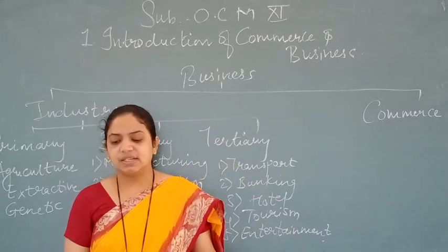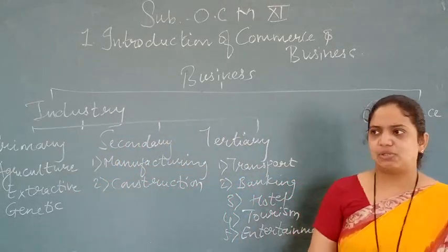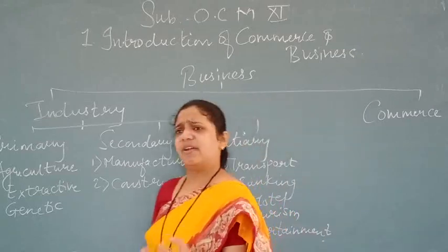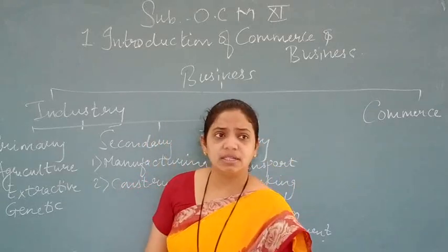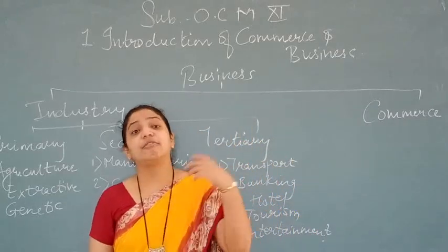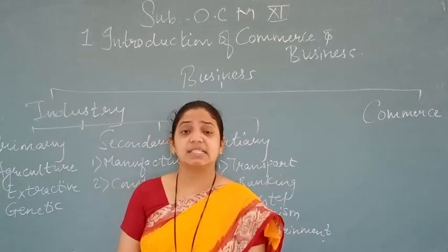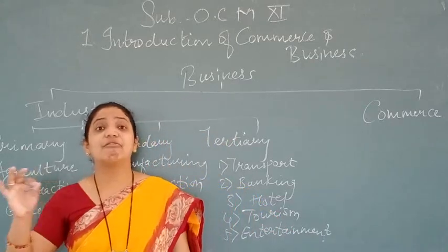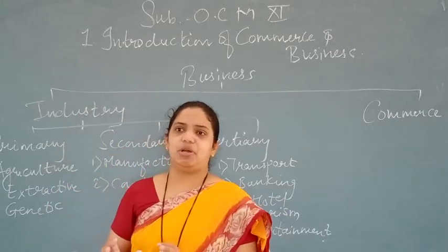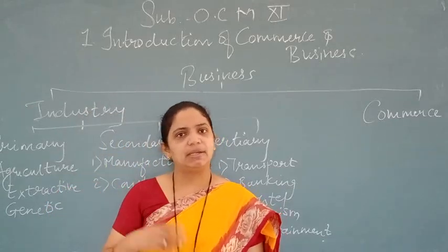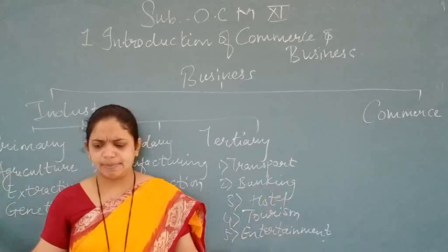Industry also creates services like banking, hotel, insurance, tourism, etc. Industry always creates form utility — this is very important. It converts raw material into a usable finished product. This is possible with manpower, machines, and large capital investment. You need men and employees, you need machines, and large capital investment is the life cycle of the business.